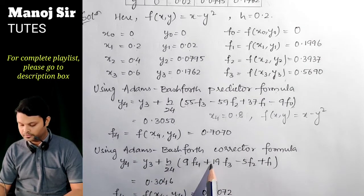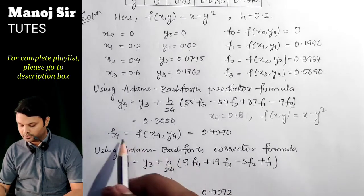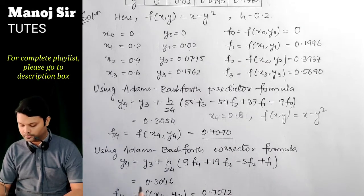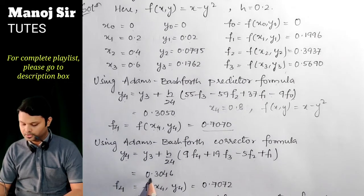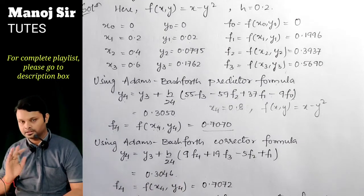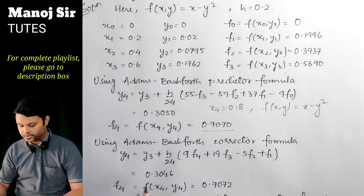Now apply the Adams-Bashforth corrector formula: y₄ = y₃ + (h/24)(9f₄ + 19f₃ − 5f₂ + f₁). Substituting f₄ = 0.7070 and the other f values, we get y₄ = 0.3046. This can be taken as the answer, but we proceed to iterate for a better value.